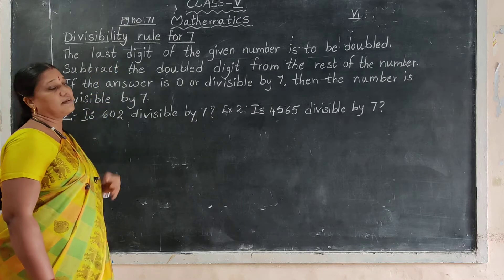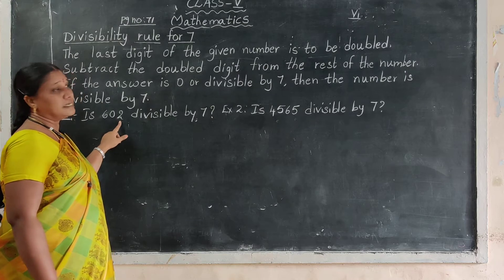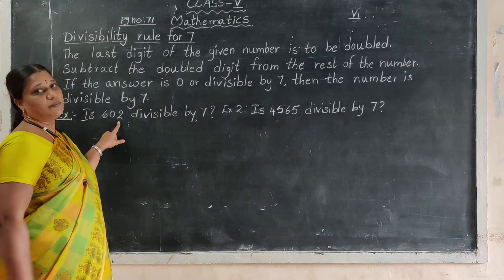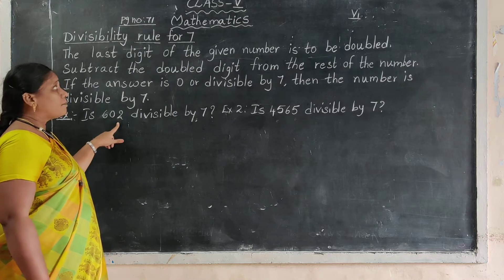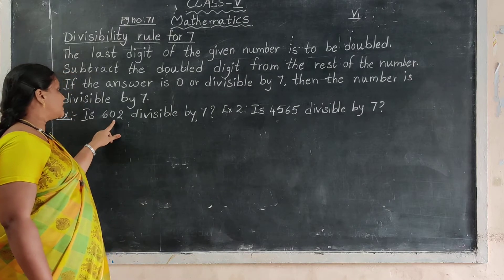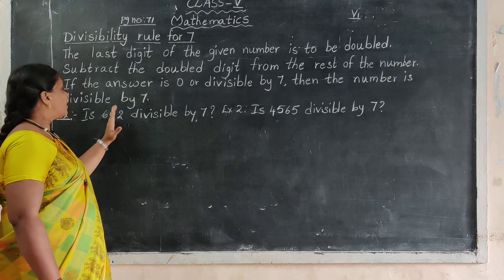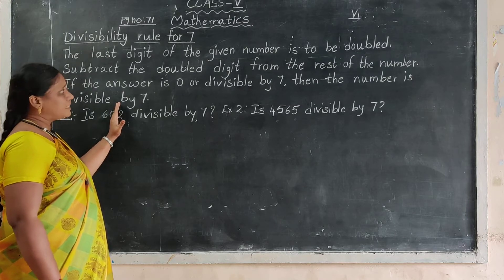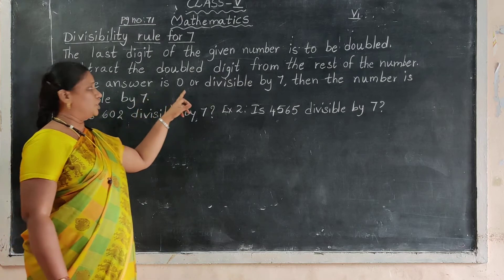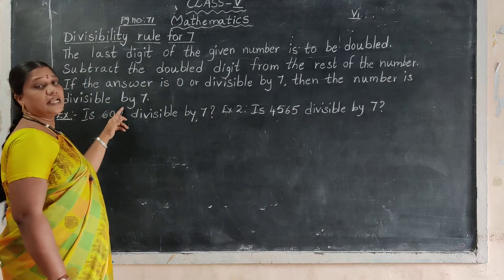The last digit of the given number is to be doubled. Subtract the double digit from the rest of the numbers. For a given 3-digit number, the last digit is doubled, and the remaining 2 digits are the rest of the number. If the answer is 0 or divisible by 7, then the number is divisible by 7.